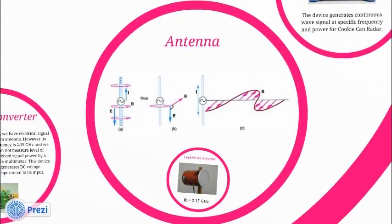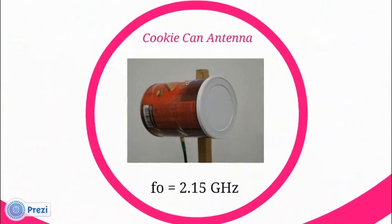Basically, antenna is a passive device that converts electrical signal to electromagnetic wave energy and vice versa. Antenna is used for transmitting generated signal and receiving reflected signal. We preferred cookie cans because it is the easiest way to have a directional antenna.